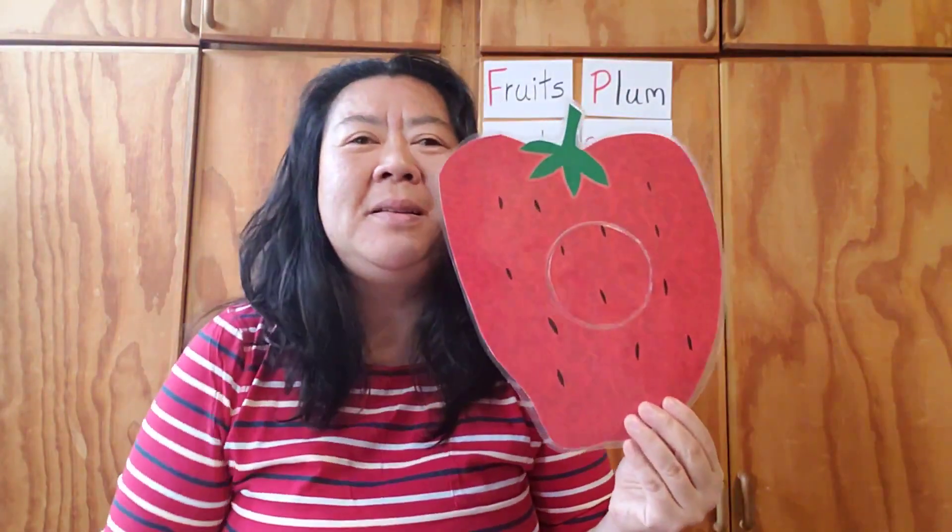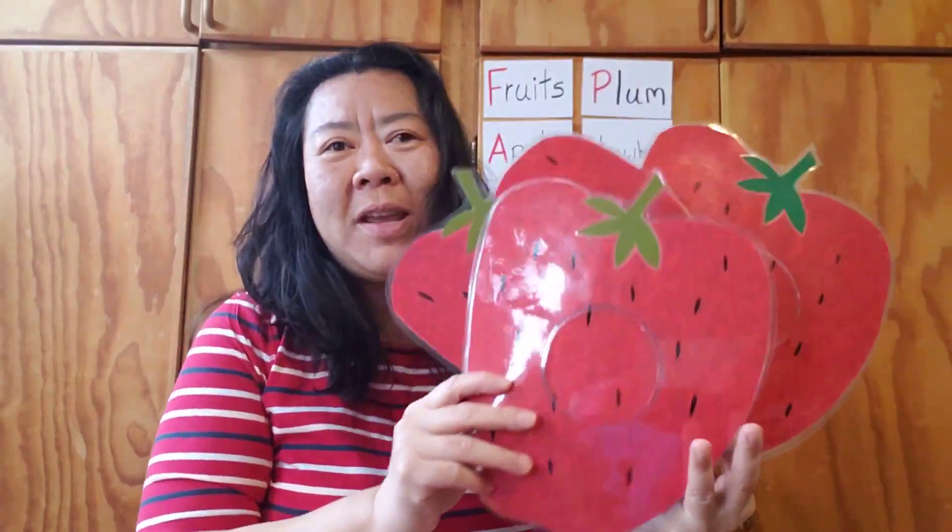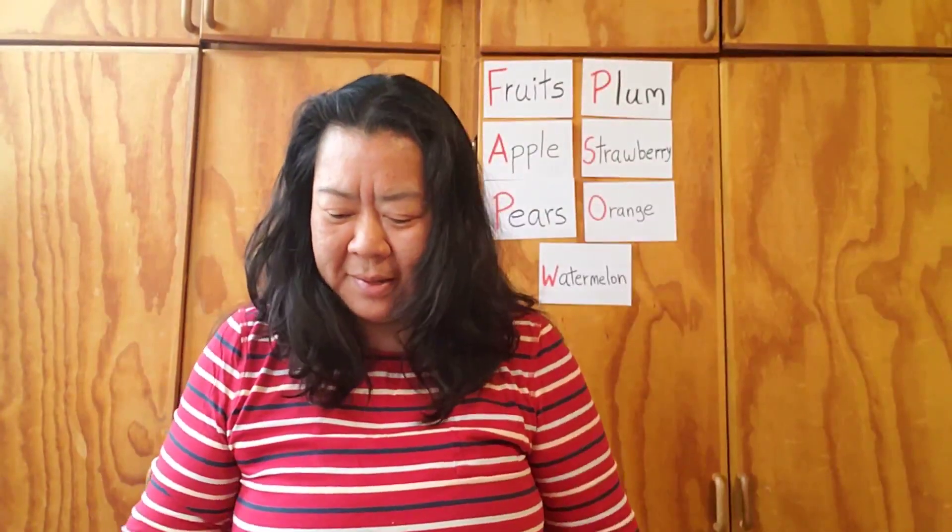Remember this one? Strawberry — I have one, two, three, four, four strawberries. And this one? Orange — I have one, two, three, four, five, five oranges.